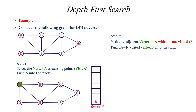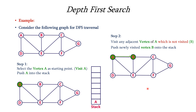Next we have to consider the vertex at the top of the stack, which is A, and find its adjacent vertices. We have to take the non-visited vertex — one that has not already been visited. For A the adjacent vertices are B, E, and D. All are non-visited but we can take only one. In this example we take B as the non-visited vertex and push it into the top of the stack.